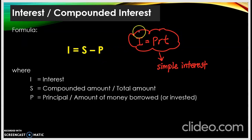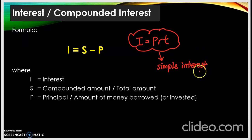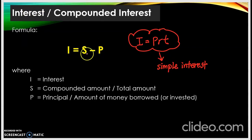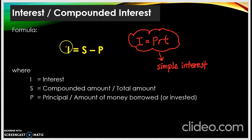Sekali lagi jangan guna I sama dengan PRT — I sama dengan PRT adalah formula untuk simple interest, jangan guna dalam compounded interest. Untuk compounded interest, untuk interest kita guna I sama dengan S tolak P. S adalah jumlah total yang kita dapat, tolak dengan pokok kita — yang tinggal adalah interest. Jangan guna I sama dengan P kali R kali T — tak boleh, this is only for simple interest.